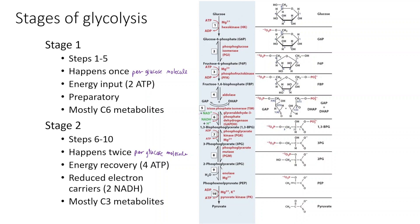Overall, if you subtract the two ATPs put in during Stage 1, there is a net yield of two ATP molecules per glucose molecule. Also during Stage 2, the two NAD+ molecules are reduced to NADH. Stage 2 mostly involves C3 metabolites and ends with pyruvate. So we start with glucose, end with pyruvate, synthesize two net ATPs, reduce two NAD+ to NADH, and go from one six-carbon molecule to two three-carbon molecules.